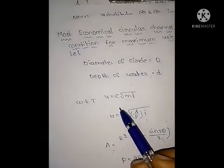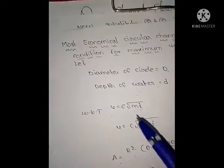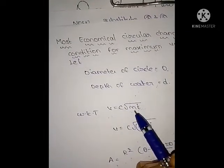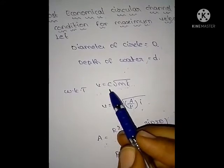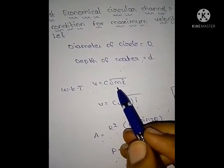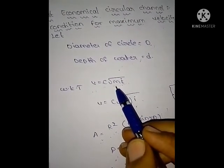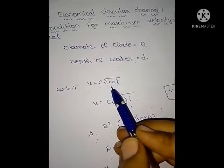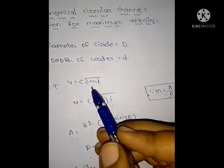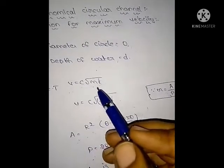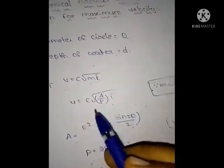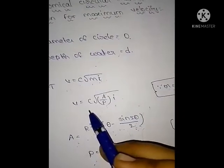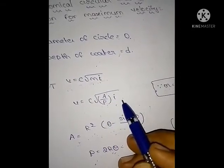Next, we know the velocity formula. Velocity V is equal to C√(MI), where C is Chezy's constant and M is the hydraulic mean depth. The hydraulic mean depth formula is M = A/P (area by perimeter). Substituting, V = C√(A/P · I).